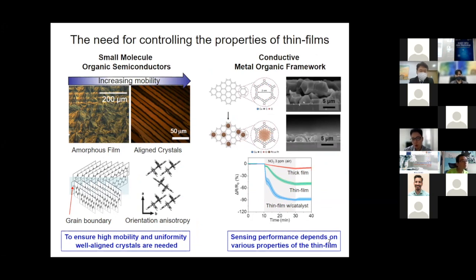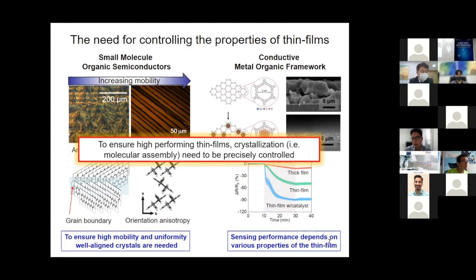Even if we are able to grow crystals, these organic crystals also have to be aligned along the same direction, because they have anisotropic nature. To ensure high mobility and uniformity, well-aligned crystals are generally needed. For conductive metal-organic frameworks for gas sensing, we need to control thickness, particle size, and particle density, and it would be valuable to embed nanocatalysts into the pores. These properties ultimately determine the performance of the sensor, so we must control crystallization or molecular assembly very precisely.